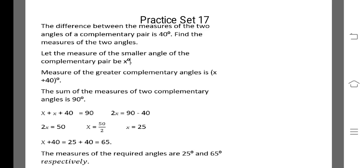We know the sum of the measures of two complementary angles is 90. So x plus x plus 40 is equal to 90. 2x is equal to 90 minus 40. 2x is equal to 50. Taking two to the other side, we get x is equal to 50 upon 2. x is equal to 25.